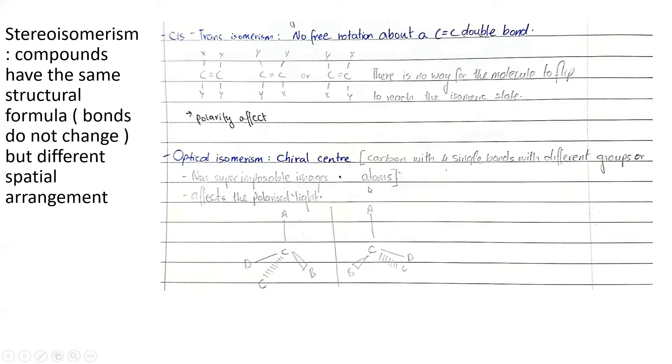Optical isomerisms have a chiral center. Basically, it's a carbon bonded with carbon with four single bonds with different groups or atoms. It's not, they produce non-superimposable images. And this affects polarized light. You don't need to know too much in detail about this except these two points. And for, and just, you can, you can, you can just see it's characterized by a chiral center. You don't need to explain it's four single bonds unless the question asks you. It's displayed as such. This is... This is...